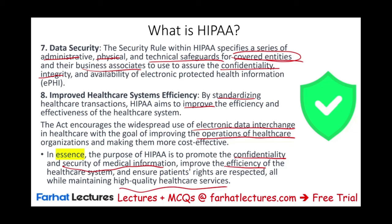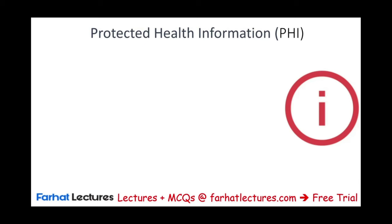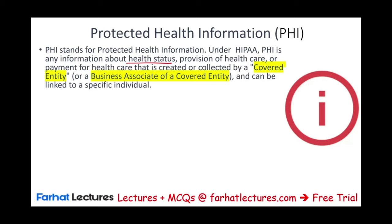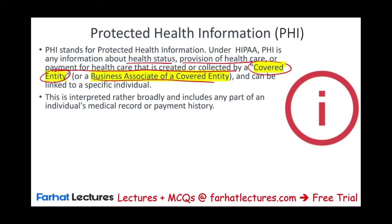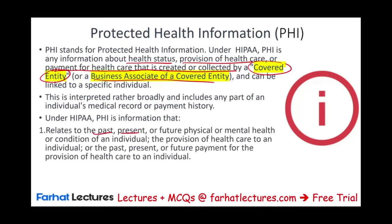Now let's look at key definitions. The first is Protected Health Information, or PHI. Under HIPAA, PHI is any information about health status, provision of healthcare, or payment for healthcare that is created or collected by a covered entity or business associate, and can be linked to a specific individual. This includes any part of an individual's medical record or payment history — past, present, or future physical or mental health, or payment for healthcare — if it can identify that individual.